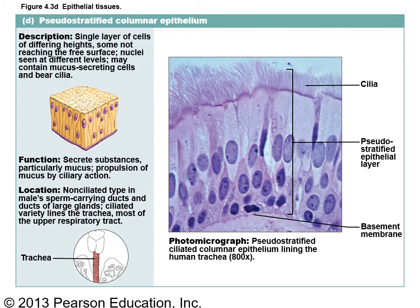Pseudostratified columnar epithelium — the word pseudostratified means falsely stratified. It looks like there are many layers but actually all cells touch both surfaces; they just have different shapes that make them look multi-layered. This is found in the respiratory tract, specifically the trachea, which has cilia at its surface embedded in mucus that beats toward the mouth to prevent mucus from going down into the respiratory passageways.